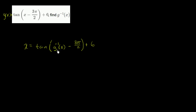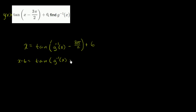Let's solve for g inverse of x — I encourage you to pause and try this on your own. First, subtract 6 from both sides to get rid of the 6, and I'm left with x minus 6 equals tangent of g inverse of x minus 3π/2.